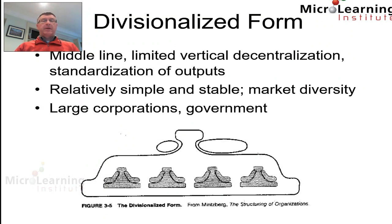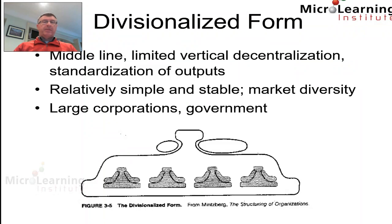In a government context, each department is specialized in its own way and has its own strategic apex, support staff, techno staff, middle line, and operating core. All of those individual departments then refer into an overall government structure, which in turn has further support infrastructure and a little bit of technostructure.